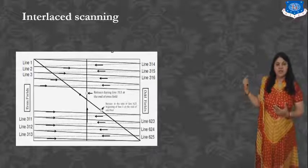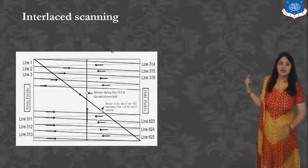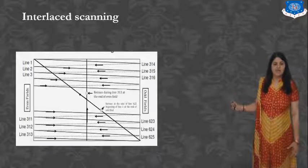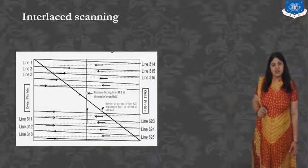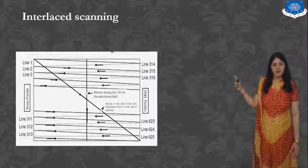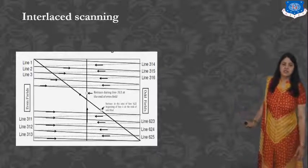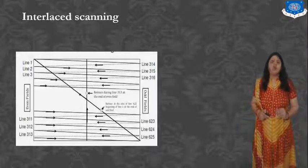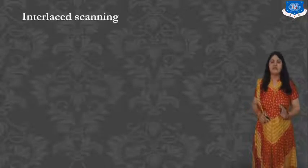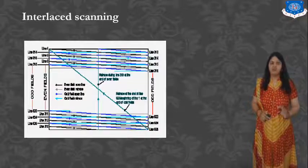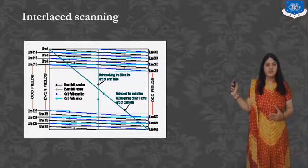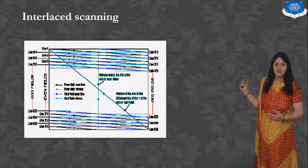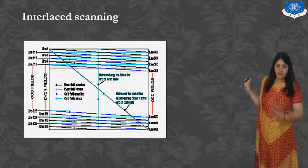Line 1 scanning is done, then line 2, line 3, line 4 up to line 313, followed by line 314, 315, 316 through 623, 624, and 625. This way, the odd field and the even field scanning is carried out. In the diagram, we can see how the odd field and even field are divided.